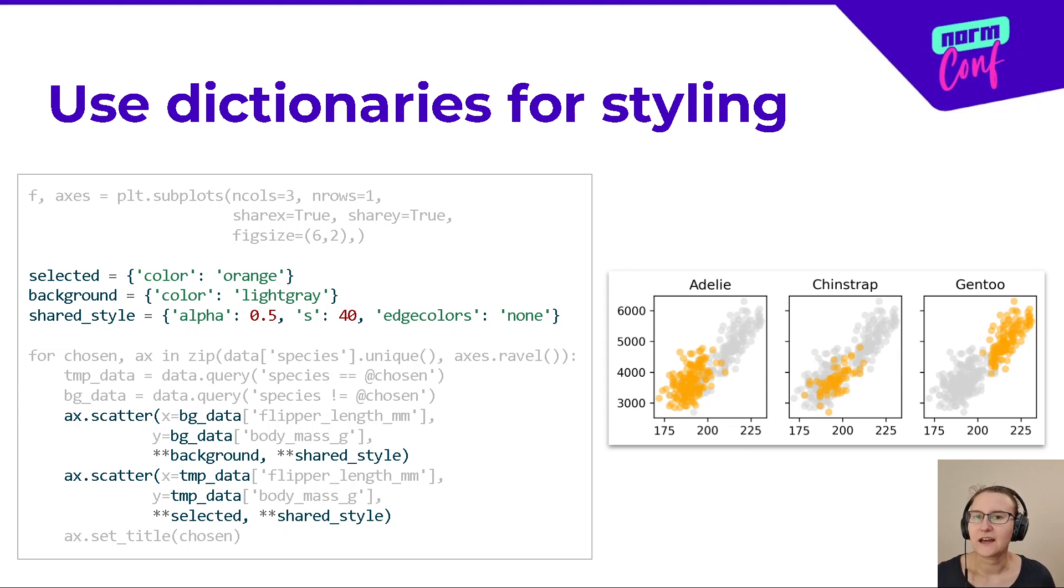Instead of hardcoding the styling, you can store it in a dictionary and then feed it as keyword arguments to the plotting function. This way you can easily change things or reuse the colors in other components of the chart. And here I use small multiples, so I declare the styling of highlighted versus background data.